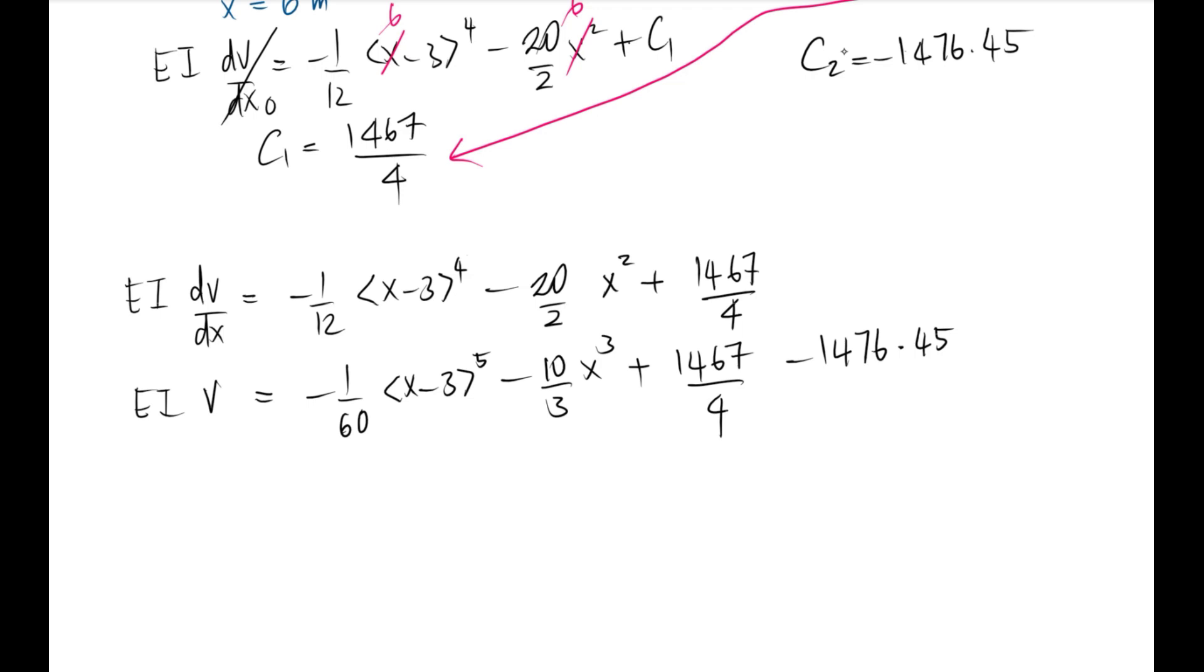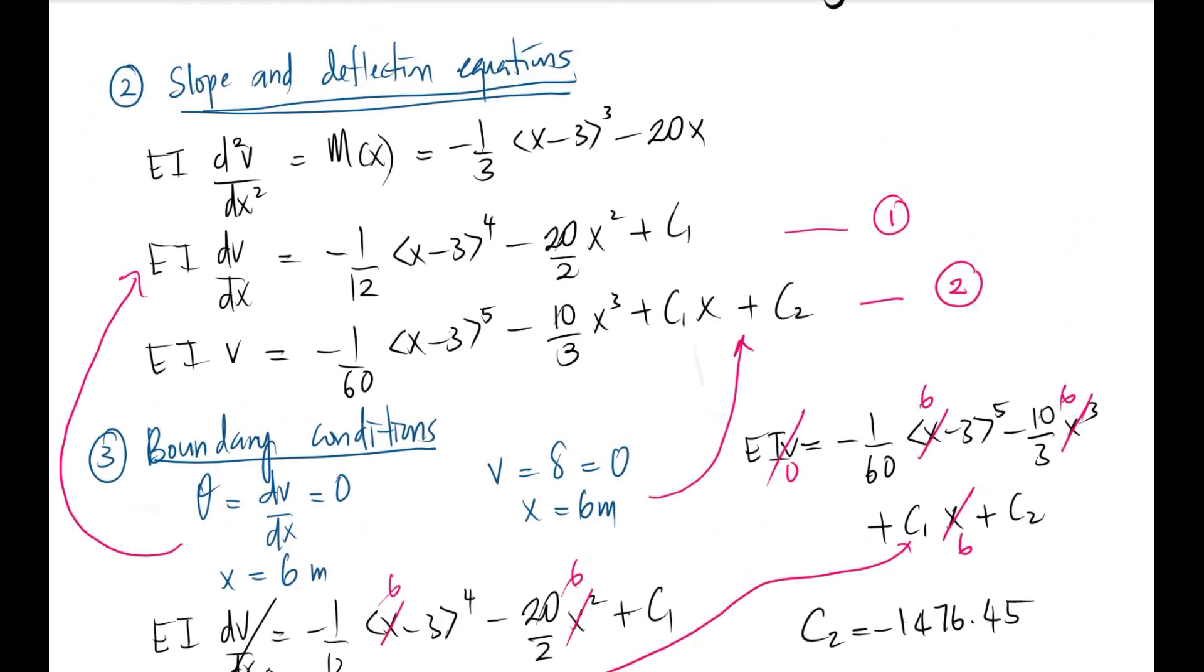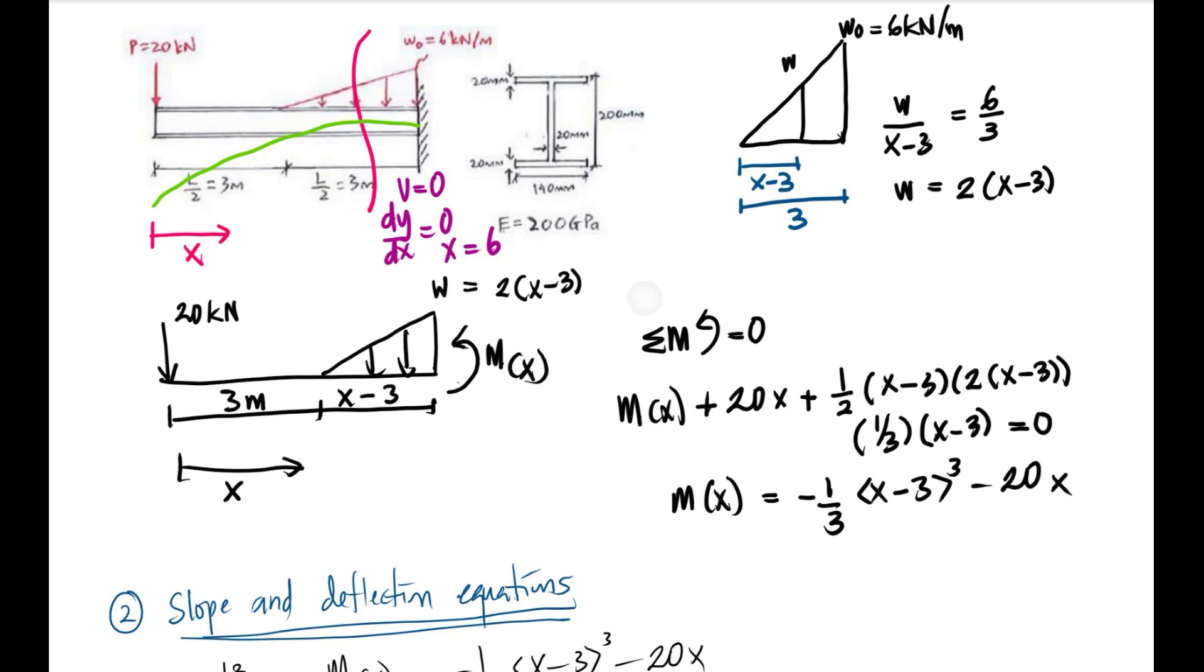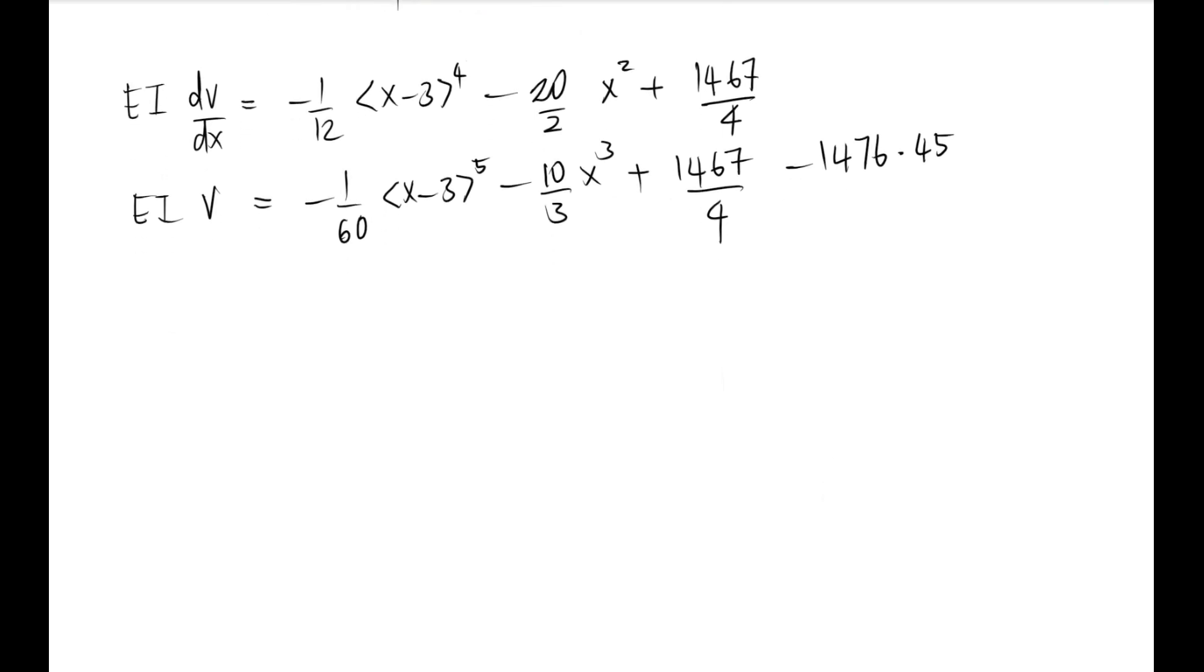So now we can determine the deflection at point C, which is the deflection at the free end here. Since we start from there, we know that x is equal to 0, so we can substitute into equation 2 to define the deflection at the end when x equals 0. You substitute everything.